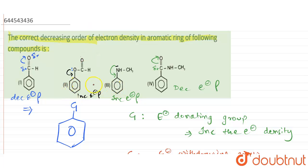Comparing compounds two and three, the maximum electron density will be for the NHCH₃ group — compound three — because the electronegativity of nitrogen is less compared to oxygen. Therefore nitrogen has a greater ability to donate electrons, making it a better electron donating group than oxygen.